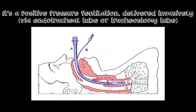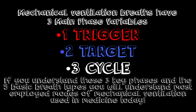It's really important to understand that whenever you deviate from normal human physiology and introduce something that is superphysiological or goes against normal physiology, you're always going to have drawbacks. These are the fundamental principles that govern all mechanical ventilation. Mechanical ventilation breaths have three main phase variables: the trigger, the target, and the cycle. If you really understand these three key phases and the five basic breath types I'll talk about later, you'll understand most employed modes of mechanical ventilation used in medicine today.